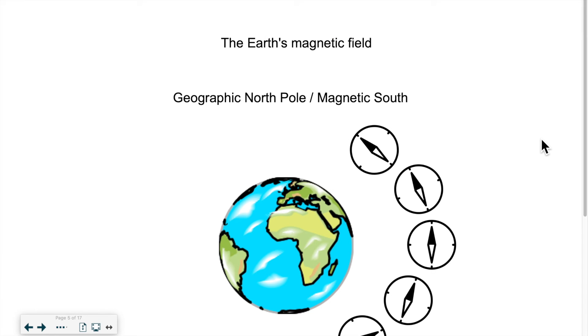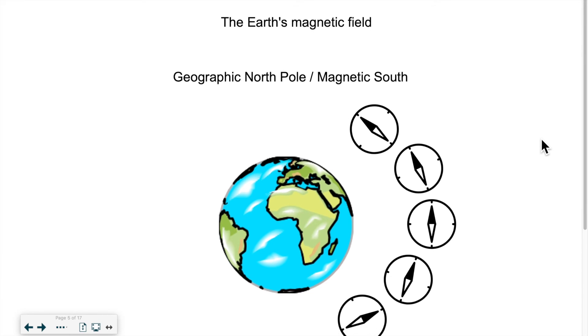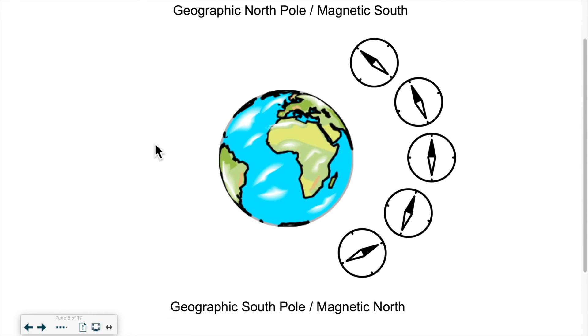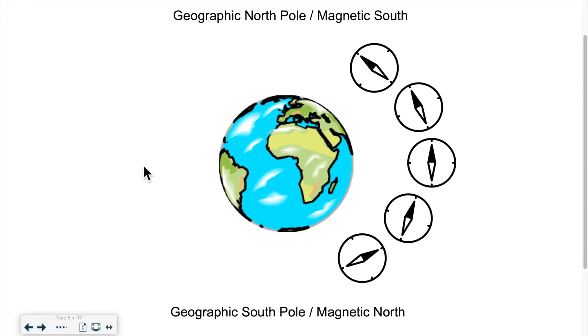Now when we look at the Earth, the Earth has a magnetic field. This is a little bit special, because there is what we call a geographic pole, but also a magnetic pole. When we look at the Earth, we know that the Earth has a north pole, where Santa lives, and we have a south pole. But these are geographic poles. Geographic north and geographic south.